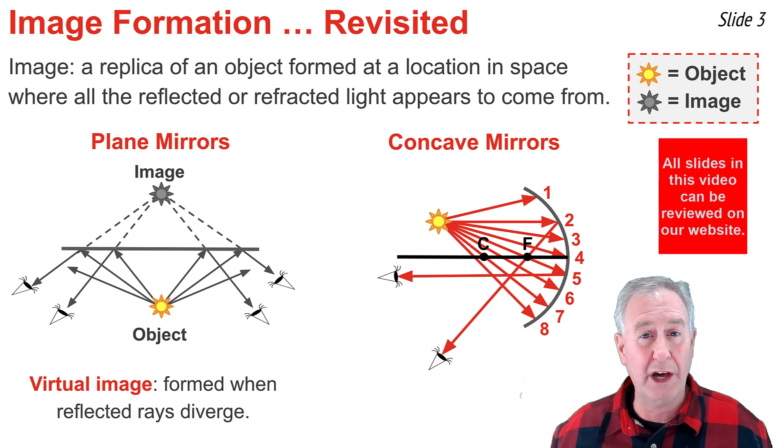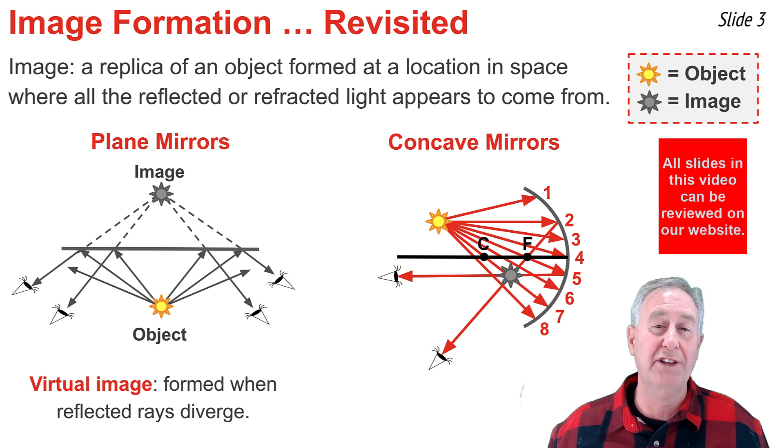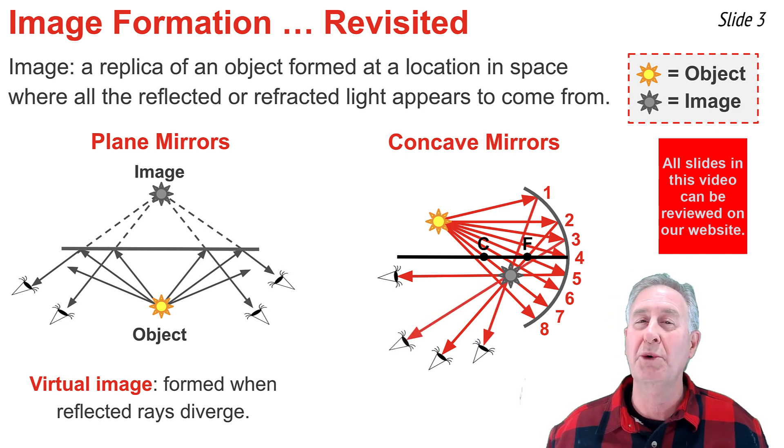And, once we know how they reflect, we will find their intersection point, and that is the location of the image. Since all the incident light started from the same location on the object, all that reflected light will intersect at this image location. So,